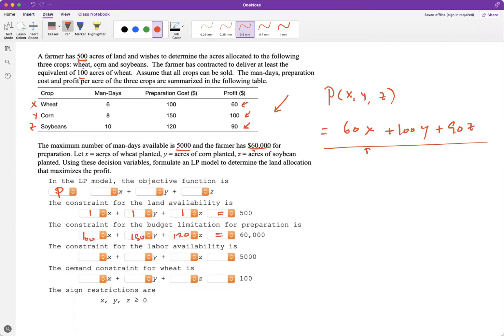The constraint for the labor availability: the maximum number of man-days is 5,000. So that would mean 6X plus 8Y plus 10Z must be less than 5,000.